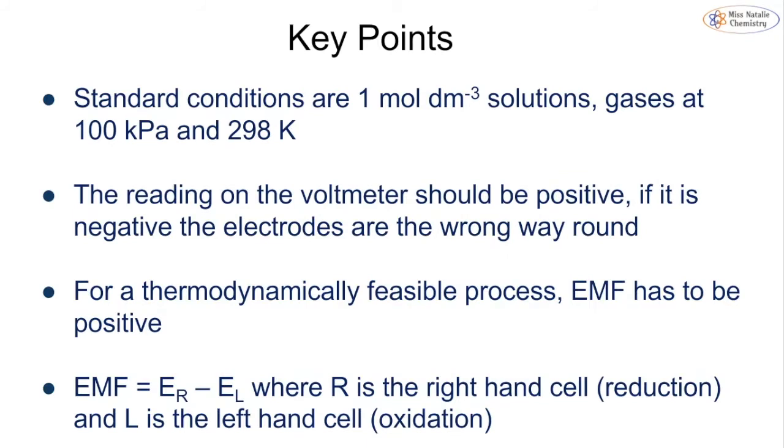Some key points that we need to know for this particular reaction. We must make sure that it's carried out at standard conditions: 1 mol dm⁻³ solutions, gases at 100 kPa, and 298 K. If your voltmeter shows a negative number, your electrodes are the wrong way around. So you just have to shift the electrodes between being left and being right. If we have a thermodynamically feasible reaction, our electromotive force, or EMF, has to be a positive value. In order to calculate that value, we take this equation: EMF = E_R - E_L, where R is your right hand cell (reduction) and L is your left hand cell (oxidation).